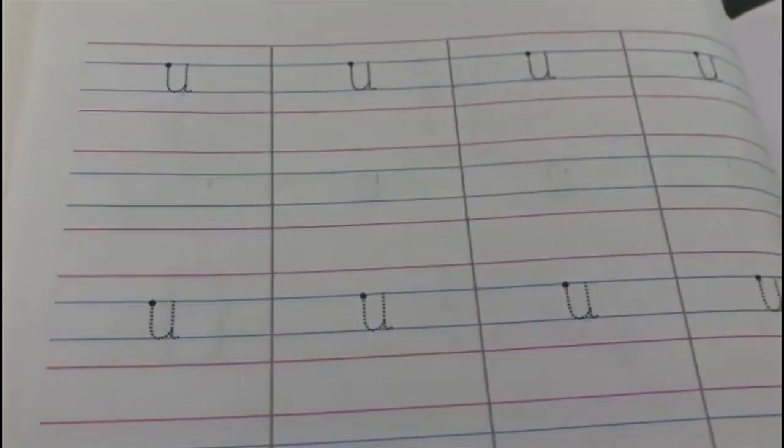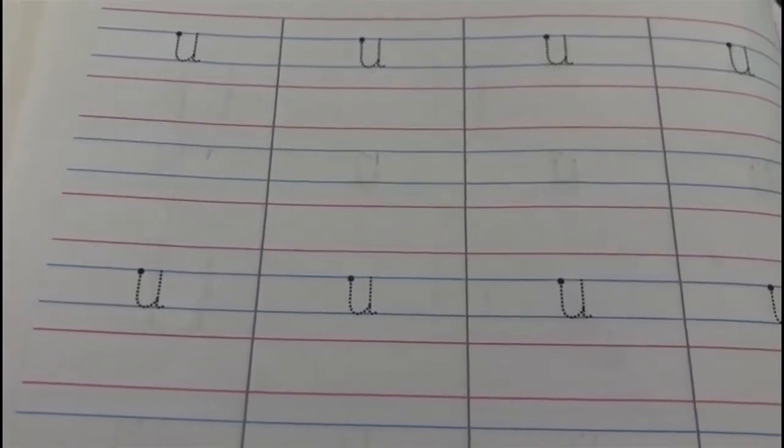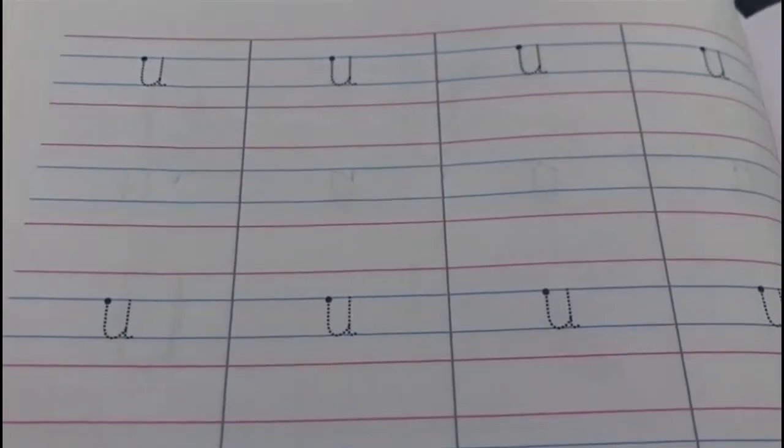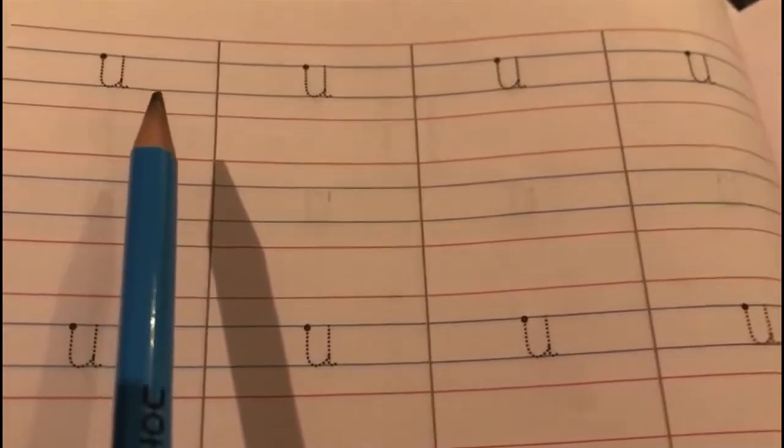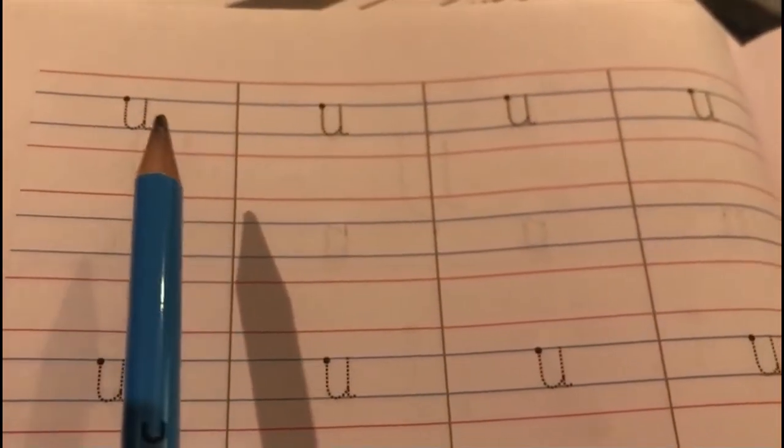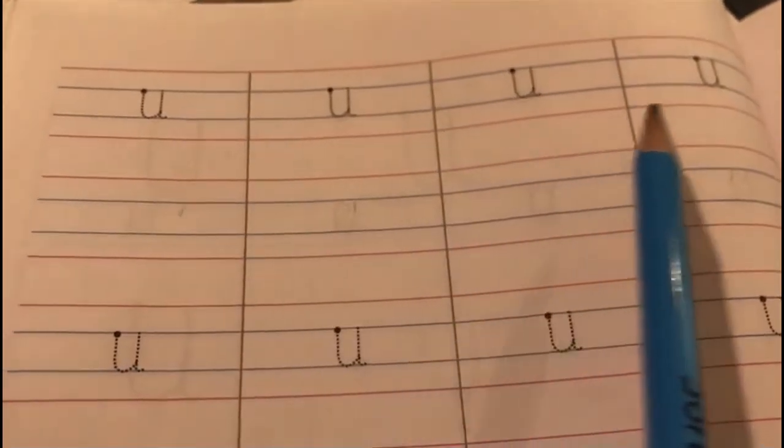So children, are we ready for the home fun activity? For this, I want you to open your pencil time English book to page number 70. As you can see on this page, we are going to write small u. Now, first, you are going to trace one line.